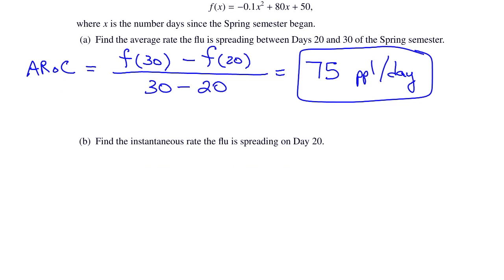Part b is to find the instantaneous rate that the flu is spreading on day 20. The instantaneous rate of change is given by the derivative. So we need to find the derivative of the function f. We'll use the shortcut since we know that now.